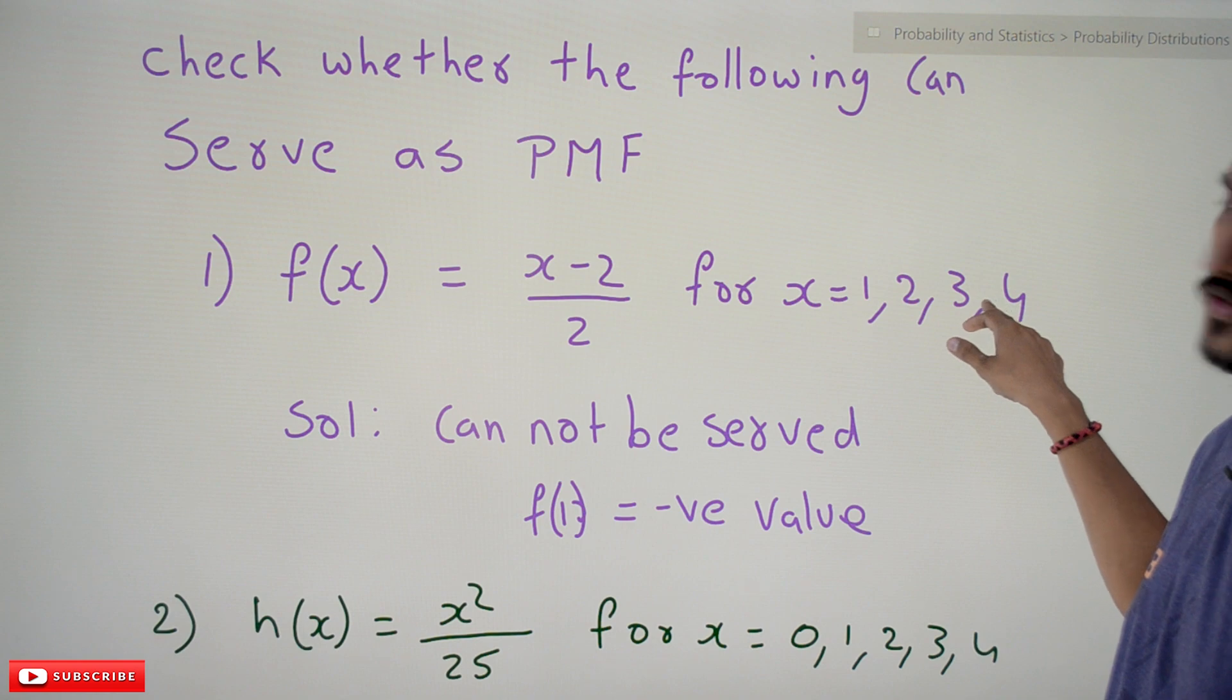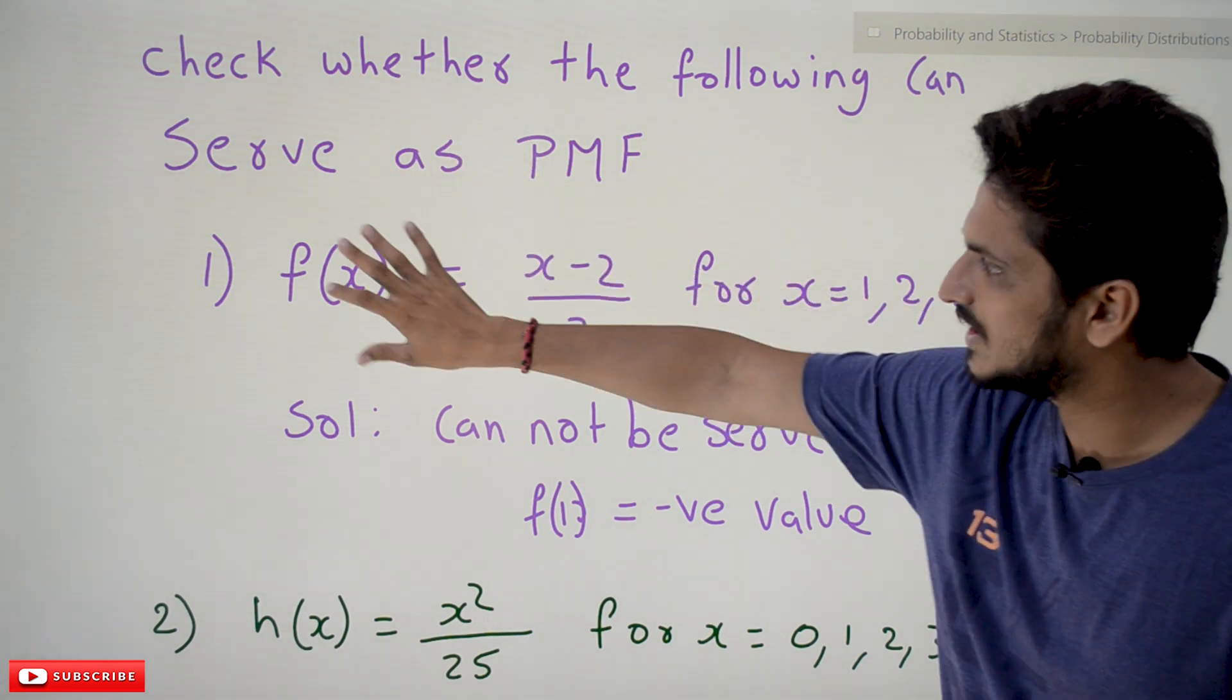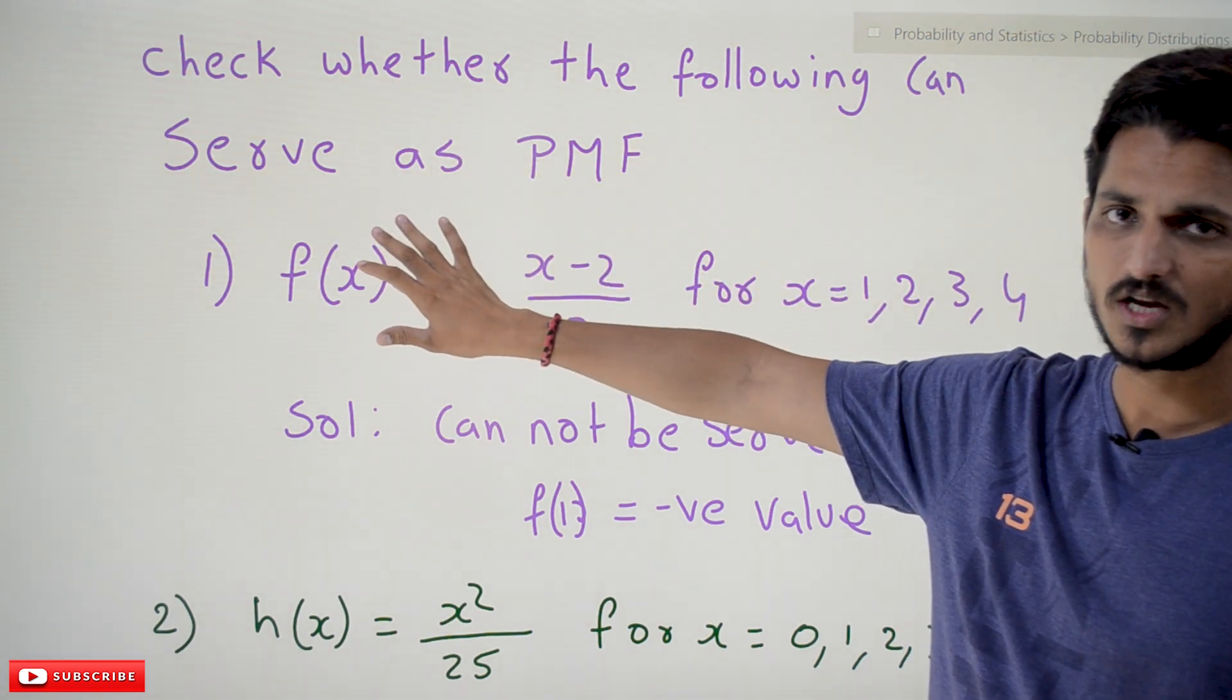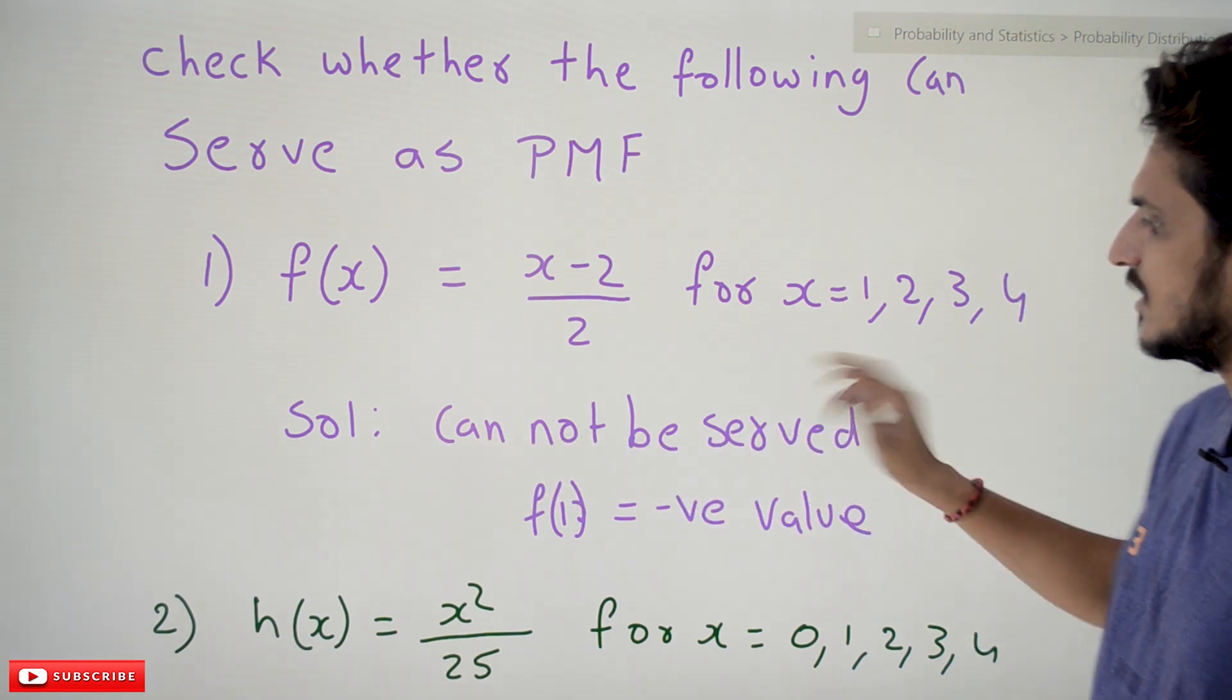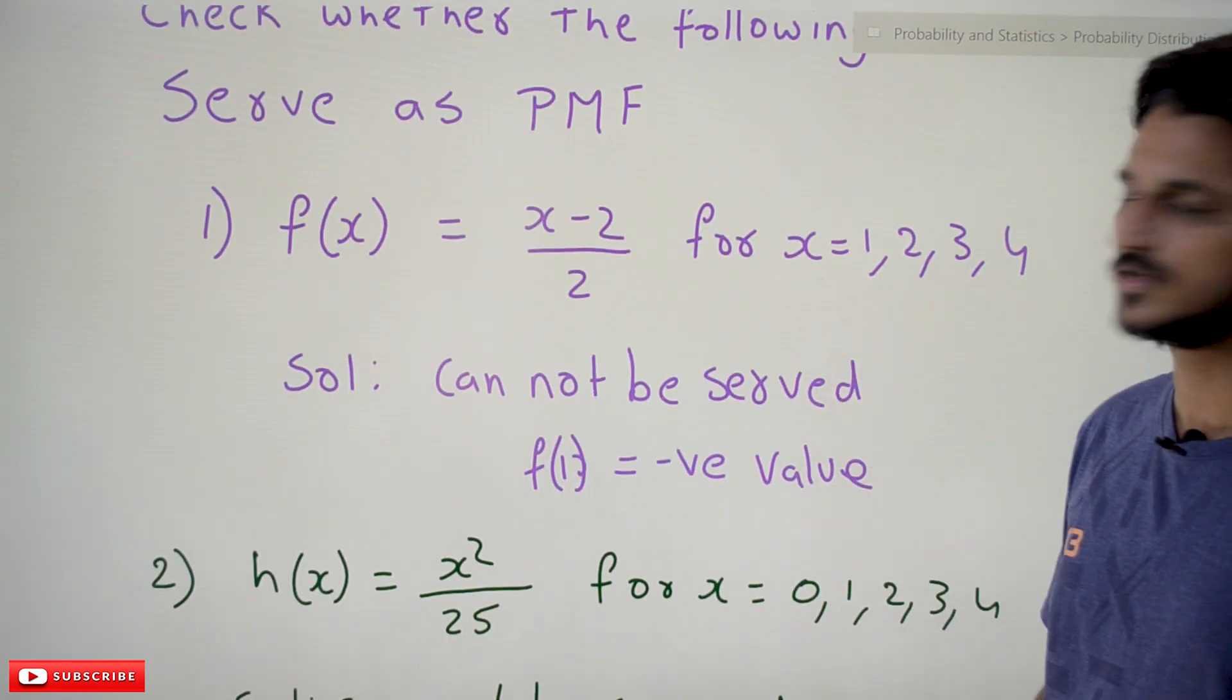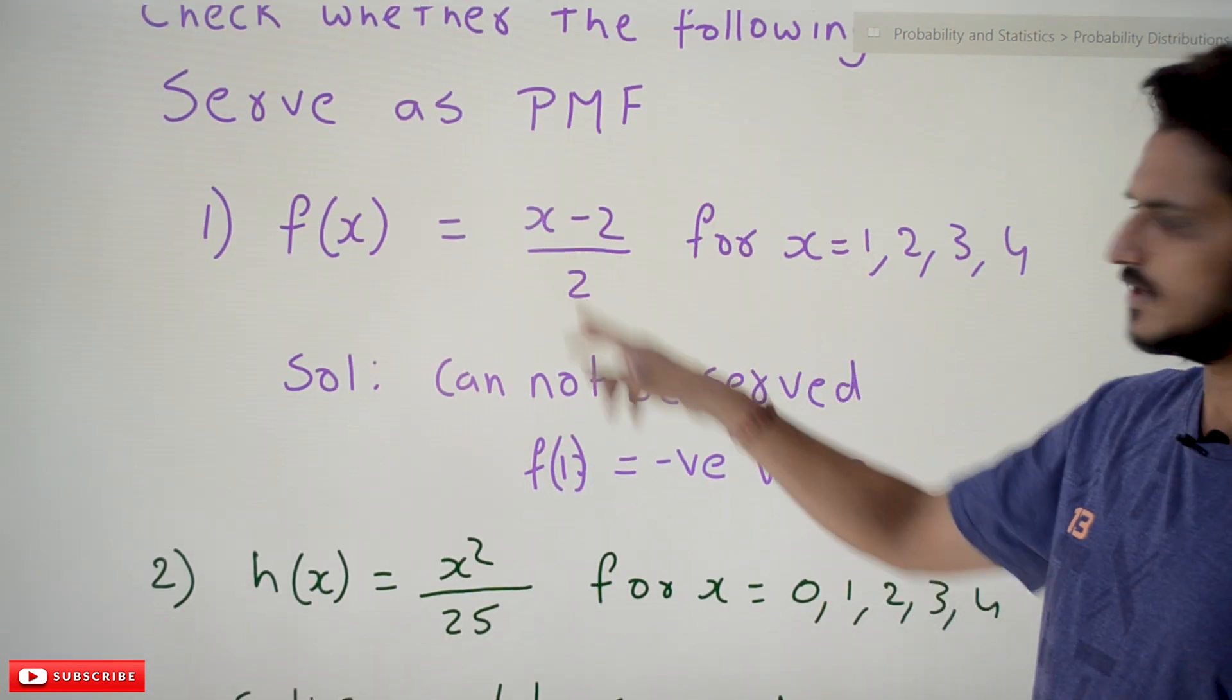Can this function serve as a discrete probability function? No, this cannot be served as a discrete probability function. Why? Because when you substitute 1 here, we are getting a negative value. Negative values are not allowed in our probability mass function.